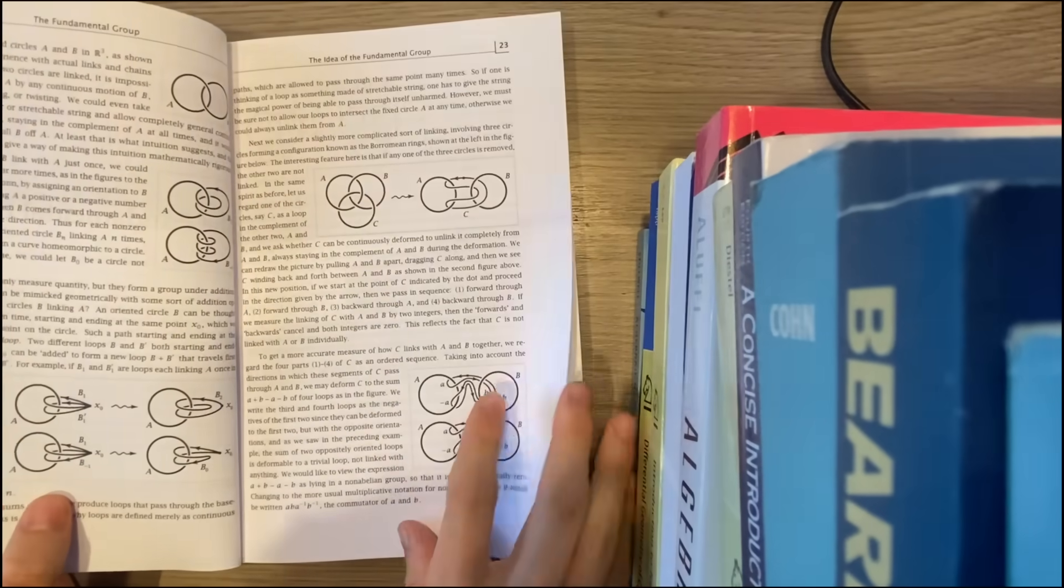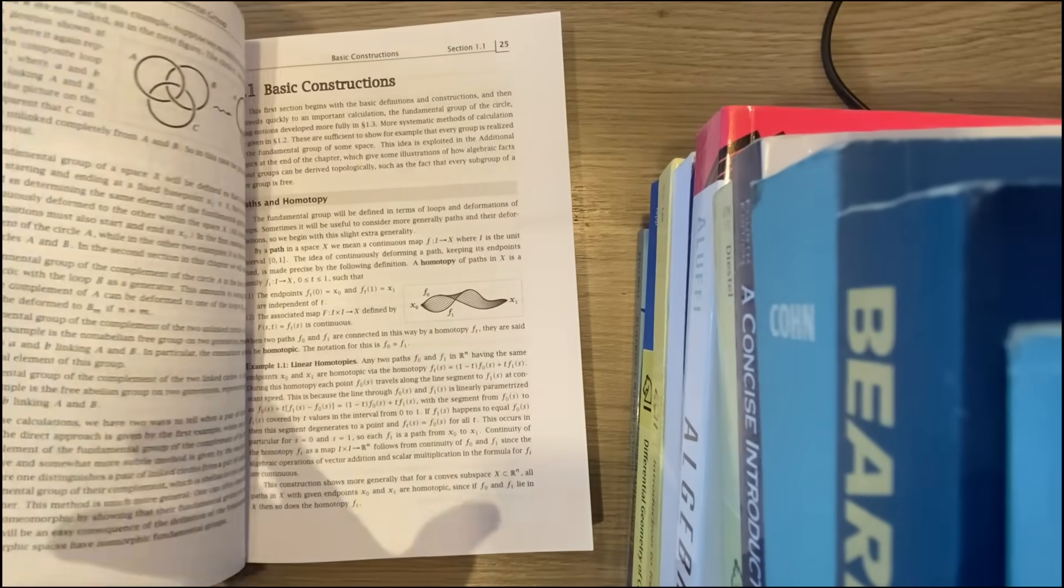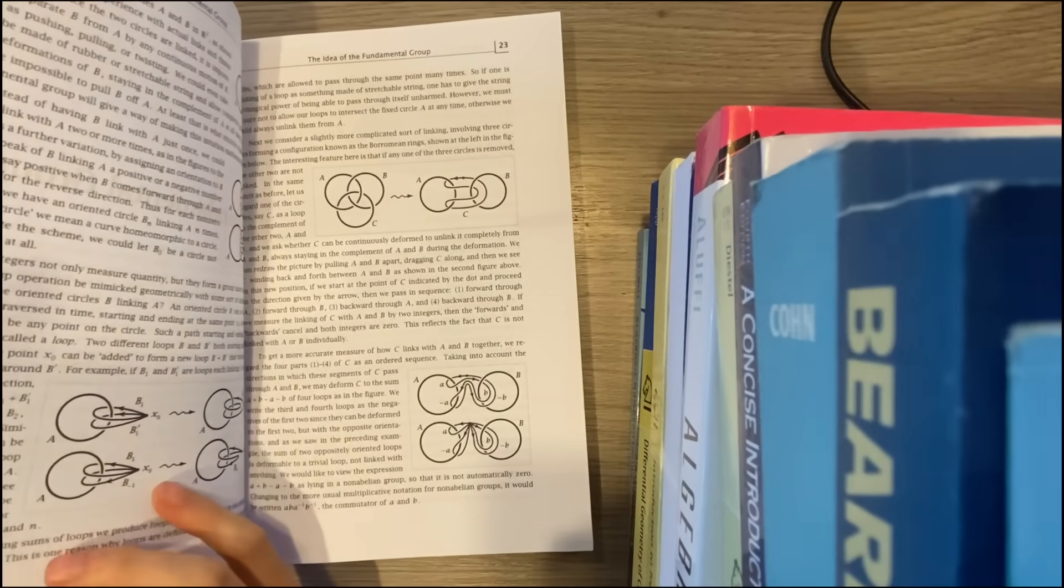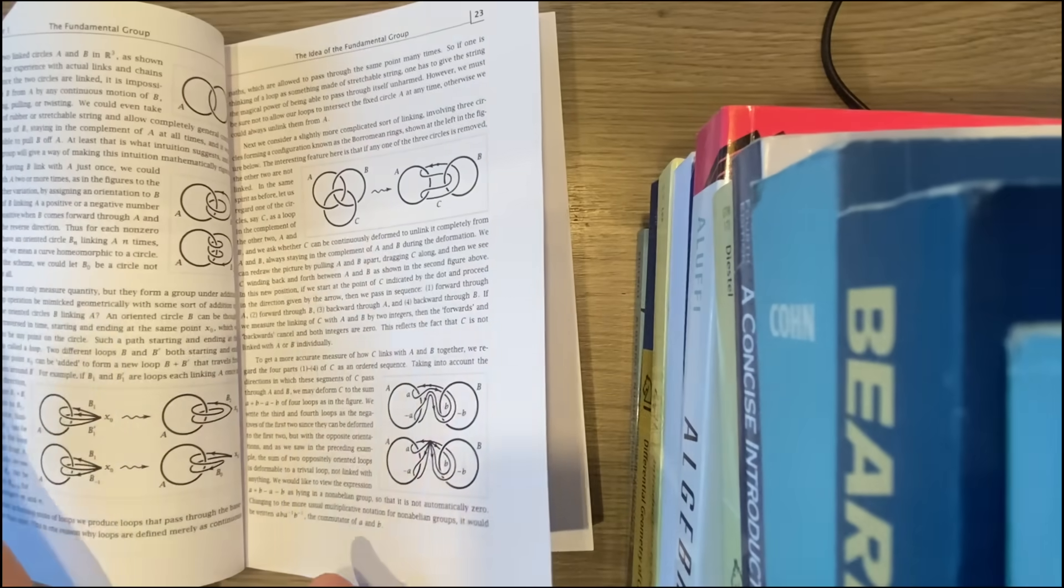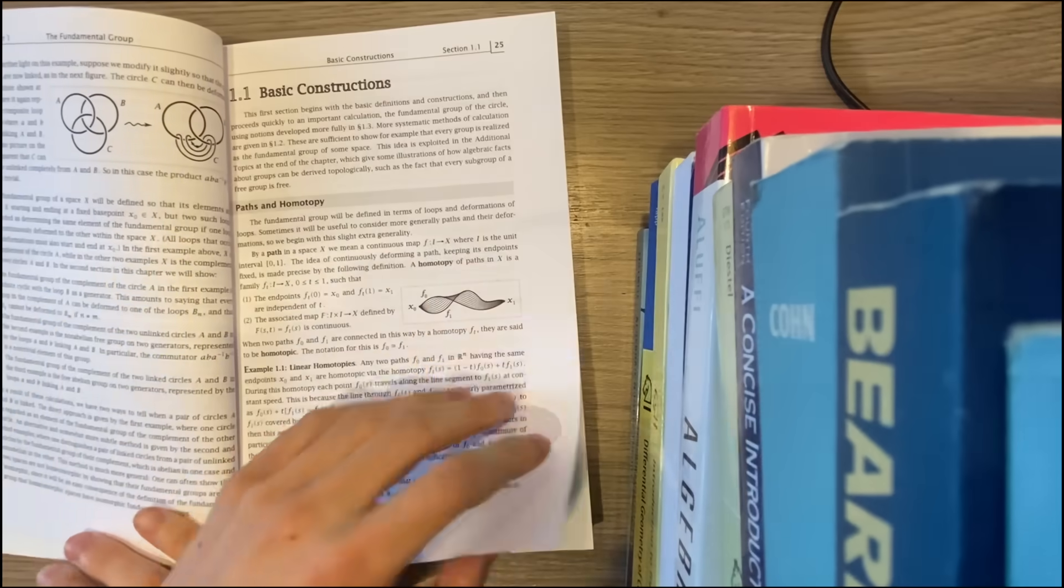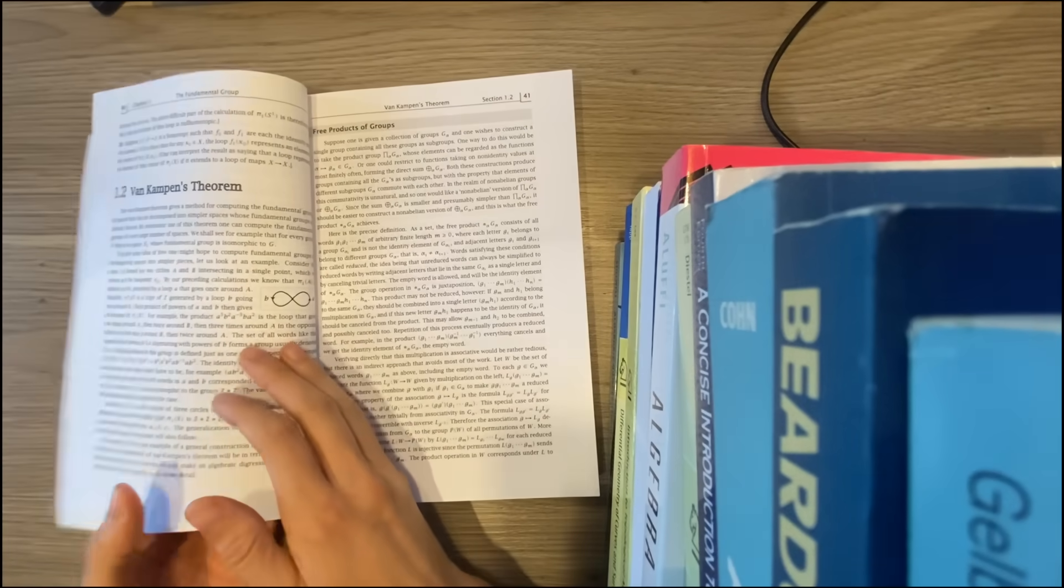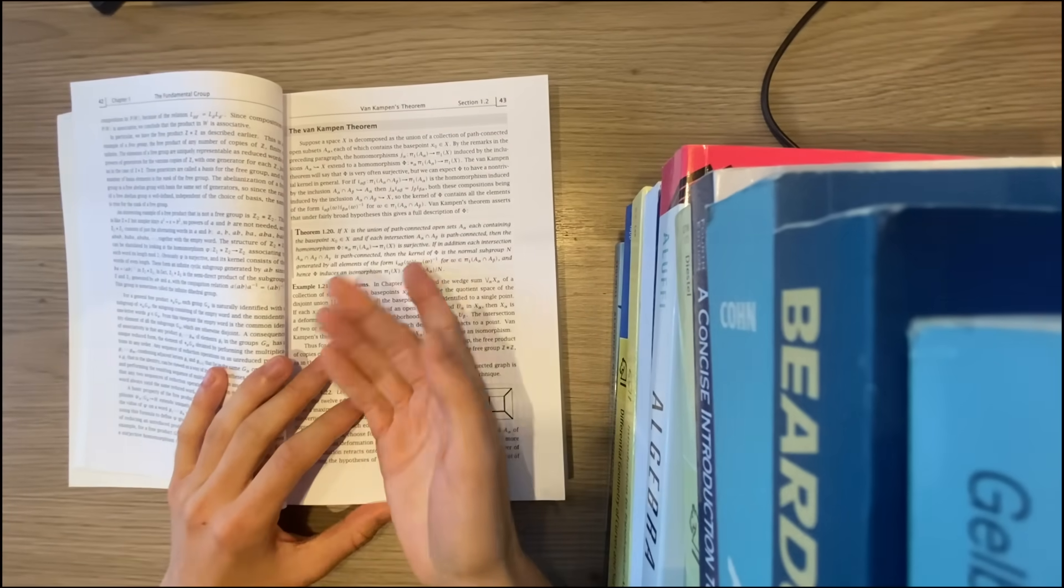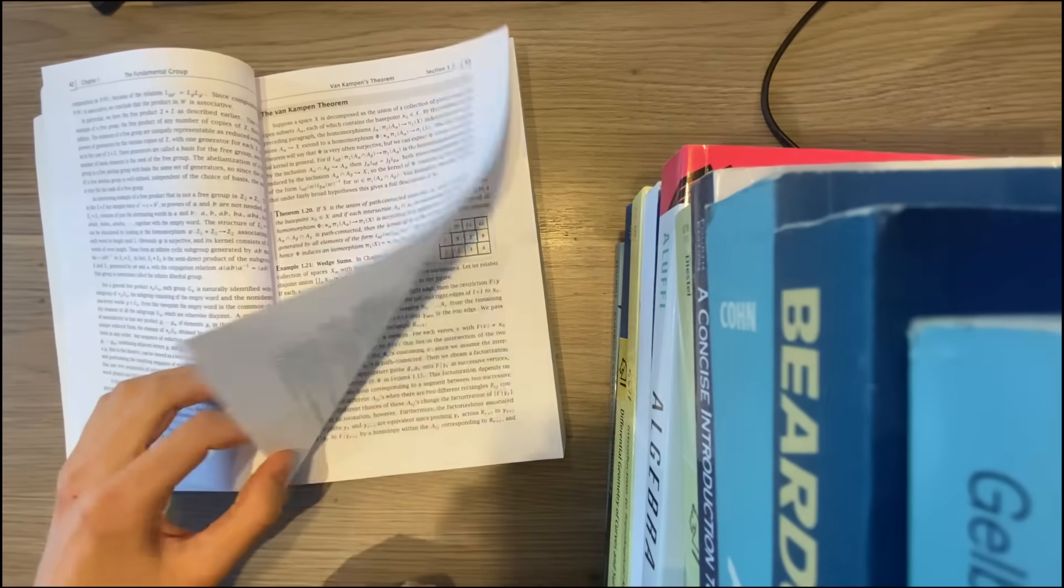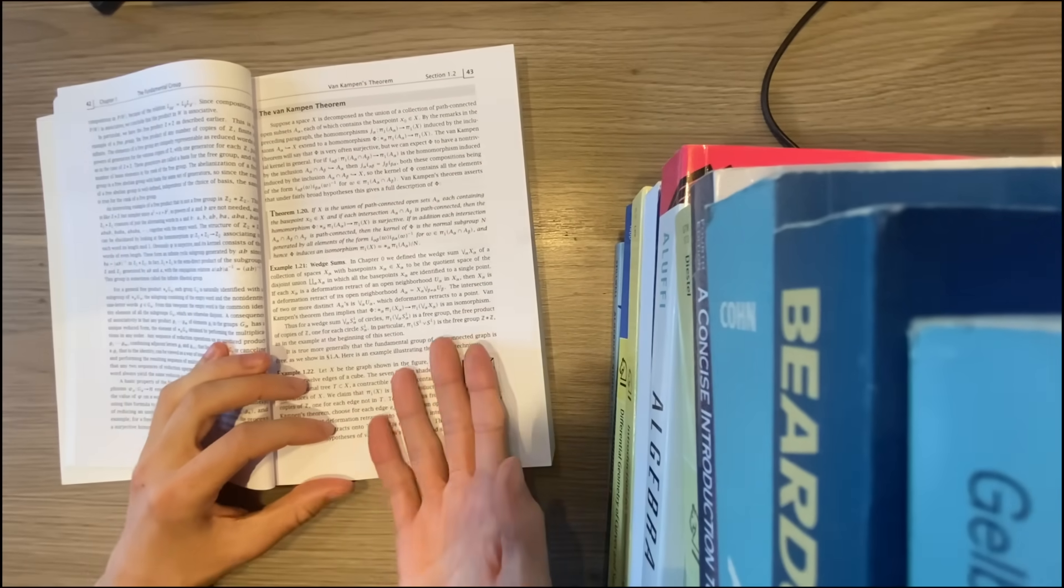Before even defining a path in a space, you get three, four pages of motivation for what it means for two loops to be fundamentally different in a space, up to wiggling around and continuously moving things. So there's four pages of motivation before actual definitions. But maybe that's just the start of the book, so you'd expect that. Well, I mean, just throughout, right? The Van Kampen theorem, you have an explanation of what you're trying to achieve with this theorem, and then you have its statement. But before diving into the proof, which is dense, example, example, okay? And then there's the proof. You're getting motivation for why this is an important result and useful.